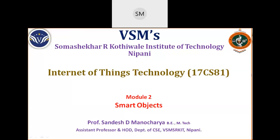In the previous class we completed the first module where we covered basic definitions, the difference between IT, OT, and IoT, use cases applying IoT, and two architectures - M2M and IoT-WF - as well as simplified and expanded architectures. We then examined the core IoT network functionalities stack with three layers, and the IoT data management and compute stack with three more layers.